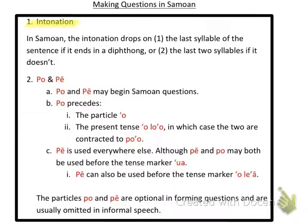For example, 'where are you going?' — 'going' is two syllables. In English, I raise my intonation: 'where are you going?' But in Samoan, you lower your voice at the end of a question. The last two syllables, 'e-i', you really lower those. So that's basically saying 'where are you going?' in Samoan.